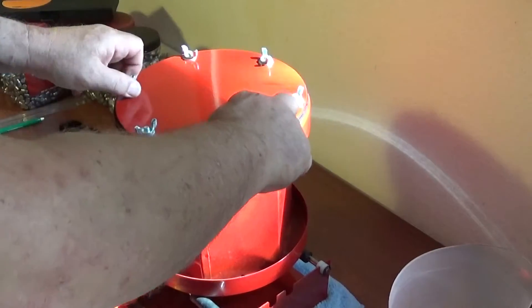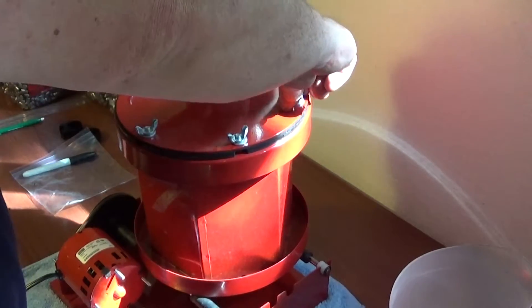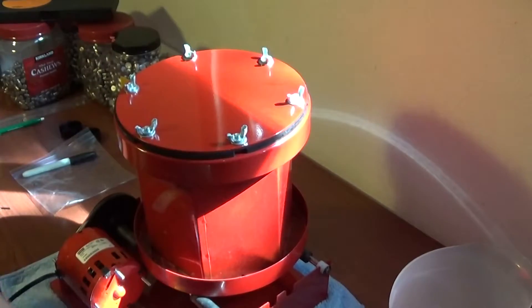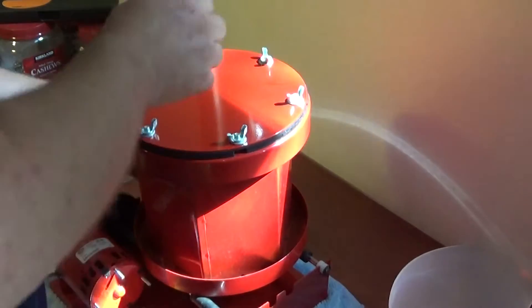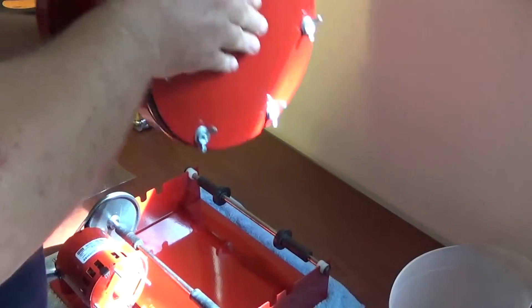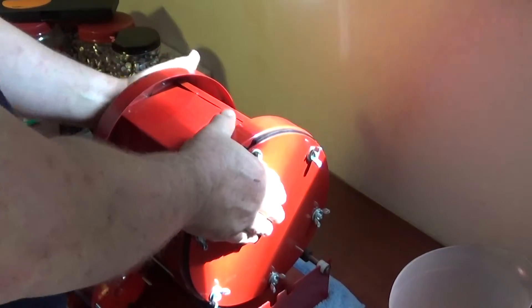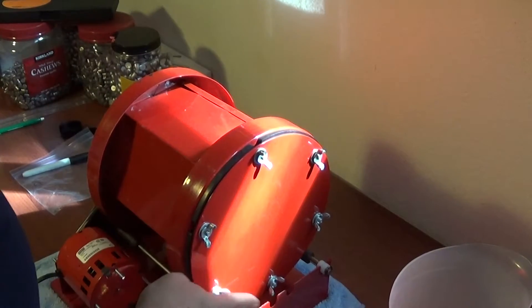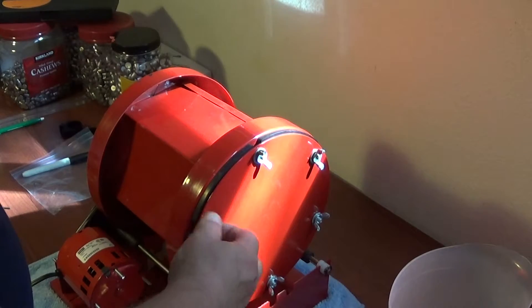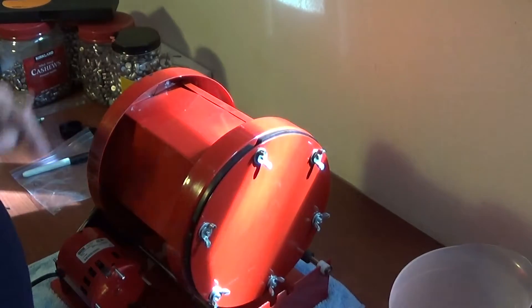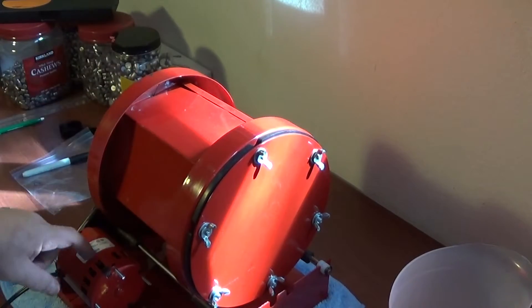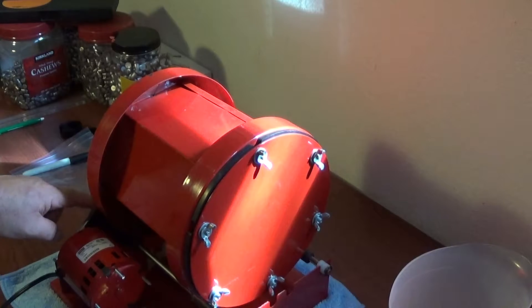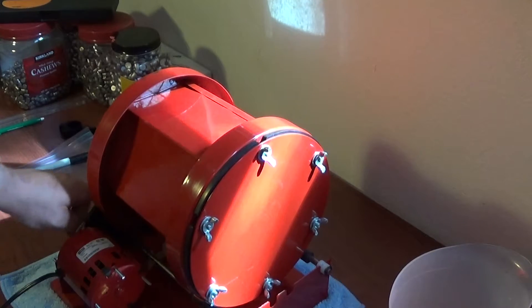So what you want to do is you want to make sure that these are taut, not super tight. And you want to line it up like so. And you also want to make sure that these wing nuts are on this side, not this side. Otherwise, what you'll do is you'll start hitting the little arbor right here.